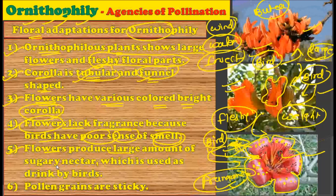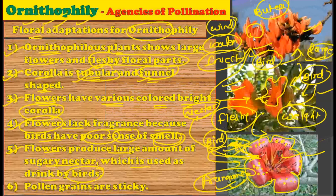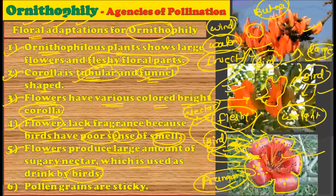The flowers produce a large amount of sugary nectar which is used as a drink by birds. In order to attract birds, these flowers produce a large amount of nectar. Only then can birds come to drink this nectar. While the bird is on the flower, pollen grains are transferred from the flower onto the bird's body. When these birds land on other flowers, they release the pollen grains onto the stigma and in such a way help in pollination.